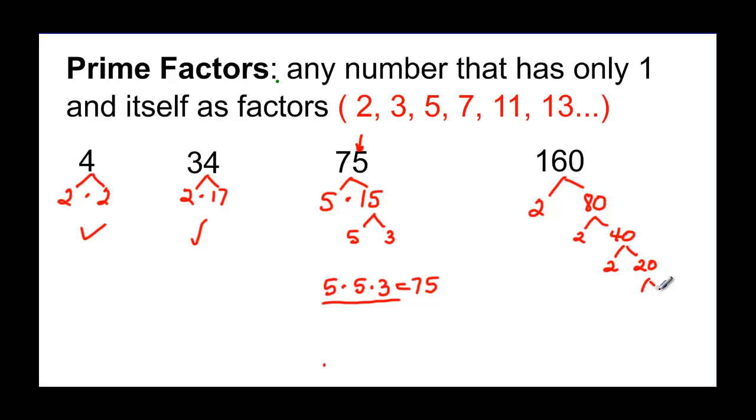And 20 again is divisible by 2, and that's going to leave me with 2 times 10. And then 10 is also divisible by 2, and it's 2 times 5. And now everything I have is a prime number, because 5 is a prime number.